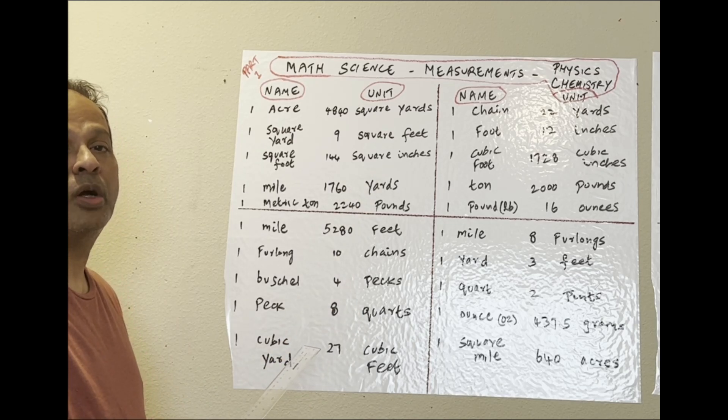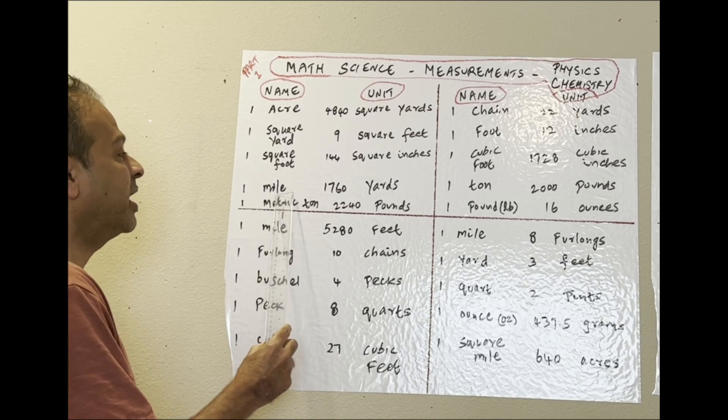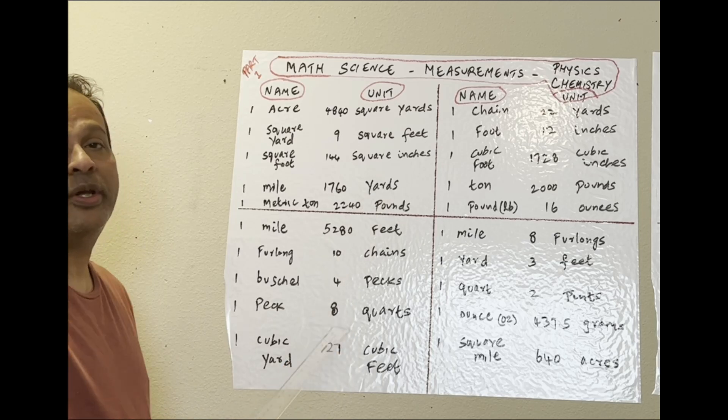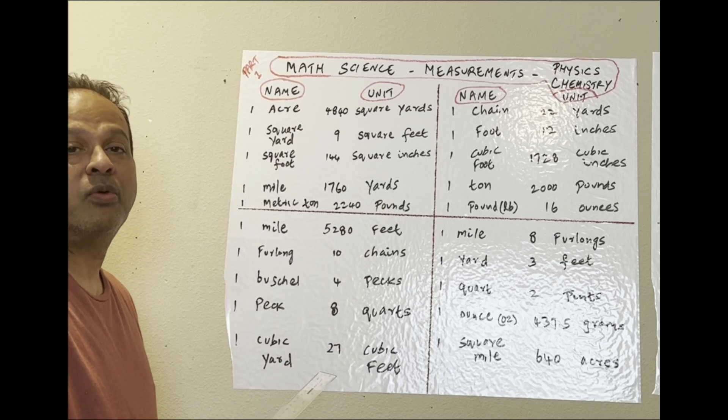One mile: 1,760 yards. One mile we drive the car or for walking and jogging every day.